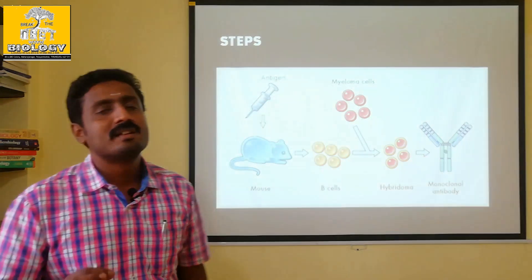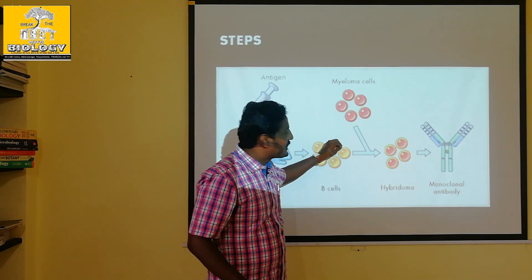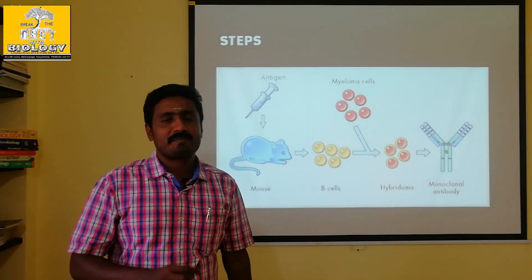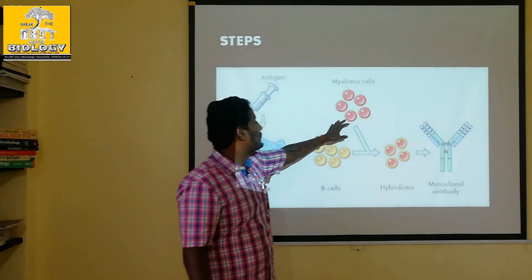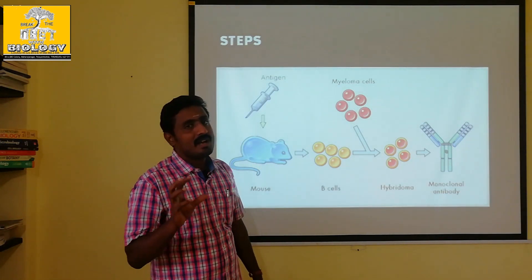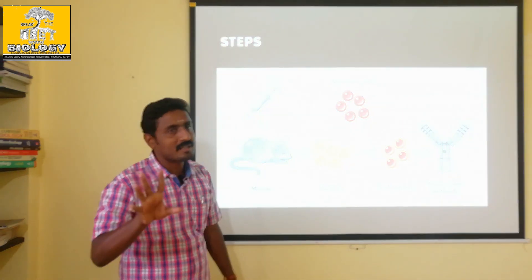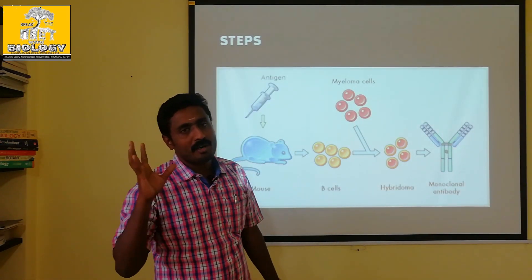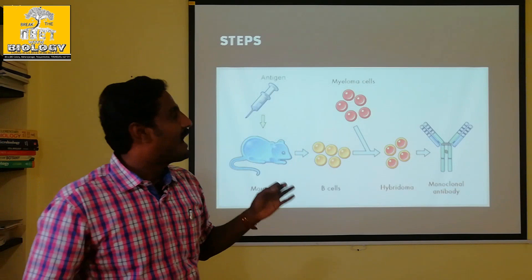The fused cells are called hybridoma cells. What is hybridoma? It is formed by hybridizing B cells with myeloma cells. This hybridization is done using a chemical called polyethylene glycol — a process similar to protoplasmic fusion. The correctly hybridized cells are called hybridoma cells.